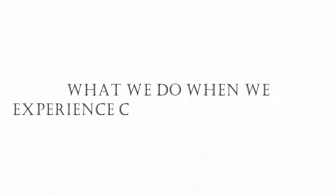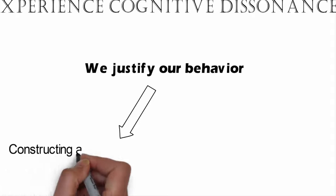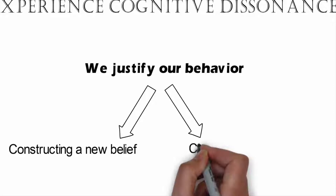What do we do when we experience cognitive dissonance? We simply justify our behavior or our beliefs to ourselves. And we do that in two ways: by either constructing a total new belief—we invent something that we didn't believe before—or we change an existing belief. So what we currently think right now, we just change it.